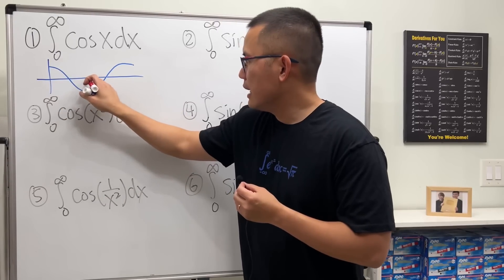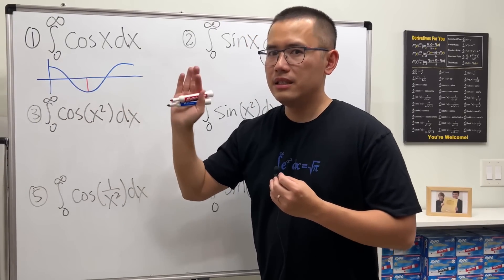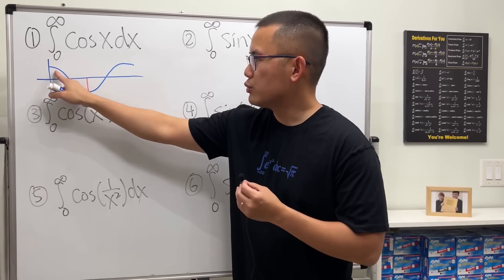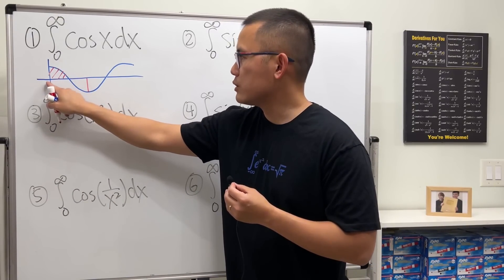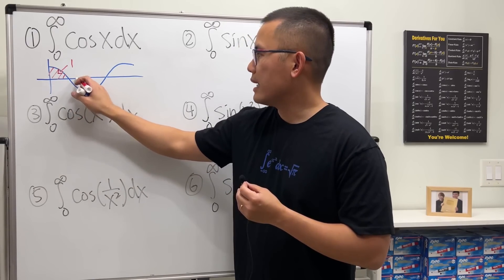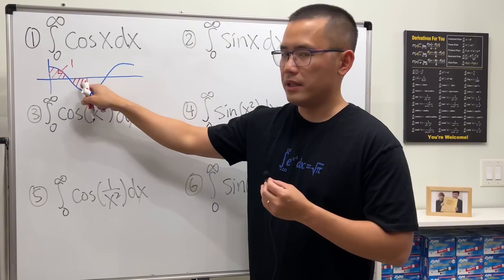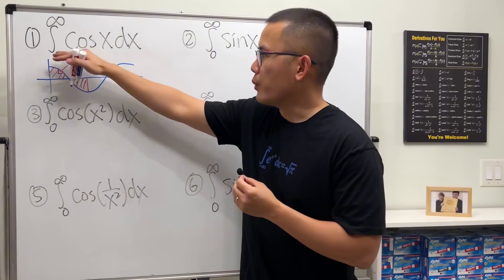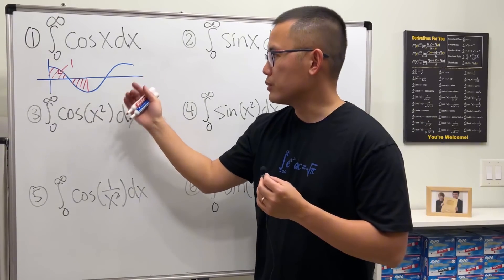Now, this and this, they have the same area, but the integral value here, this would be positive, that would be negative. In fact, if you integrate from 0 to pi over 2, you get 1. But once you go down here, the value for the integral will be negative 1. Now, when we integrate from 0 to infinity, we just have to keep track of these values.